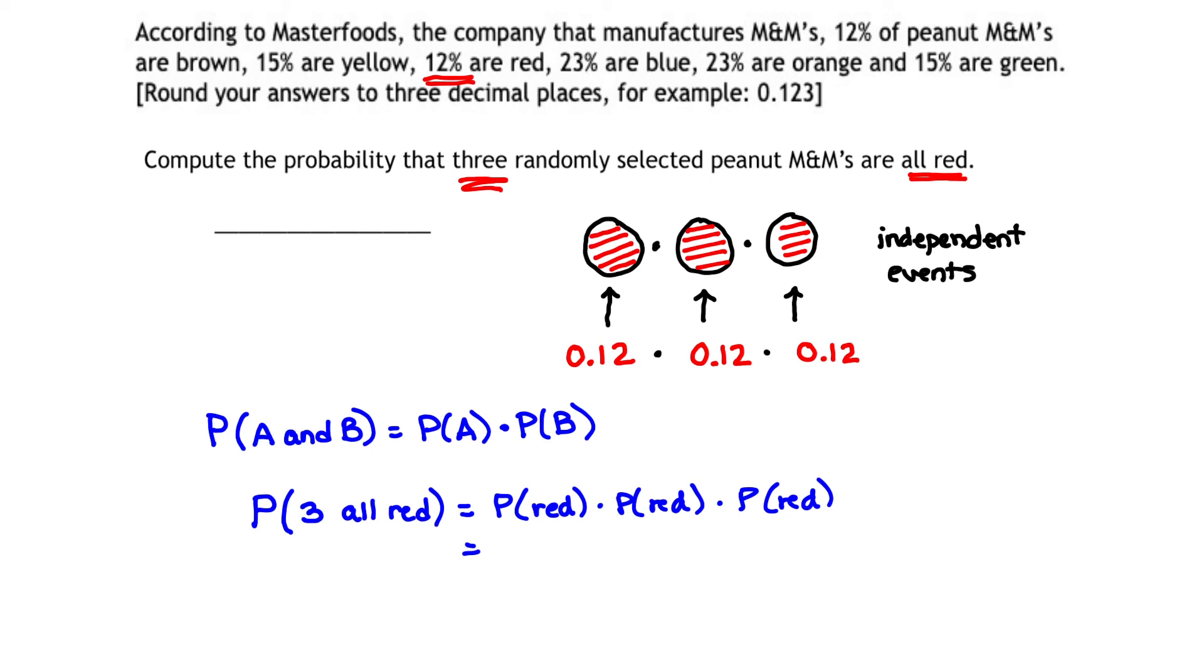Or in other words, I will take 0.12 multiplied by 0.12 multiplied by 0.12. We can also think of that as 0.12 cubed.